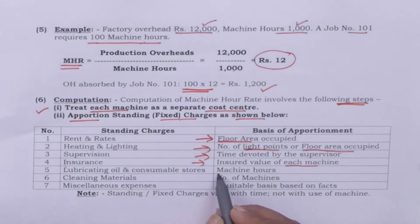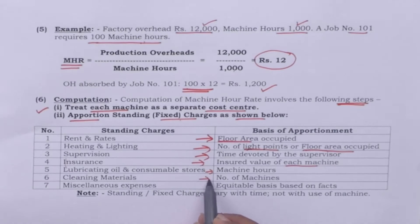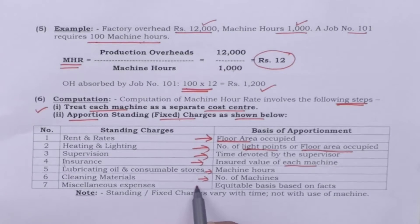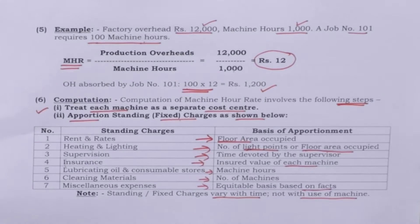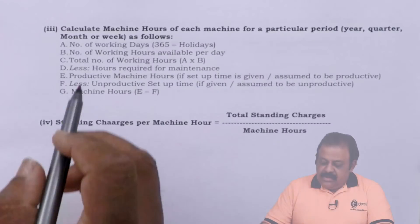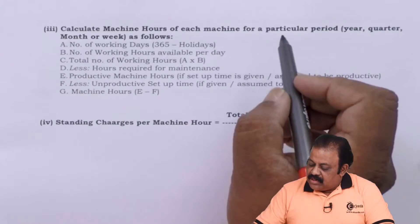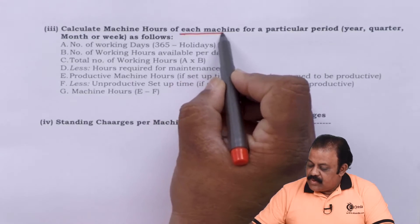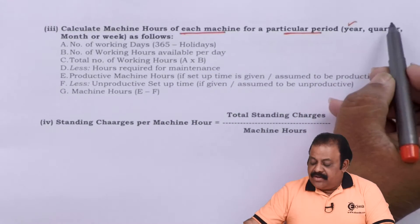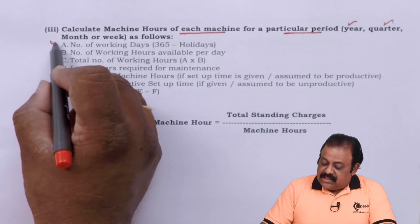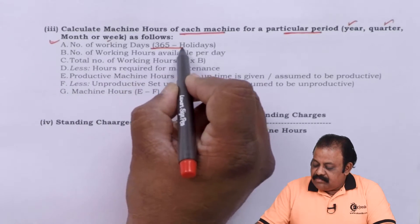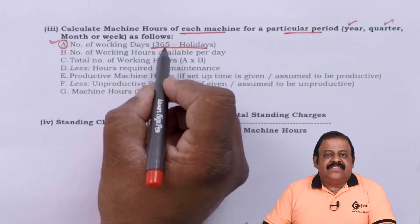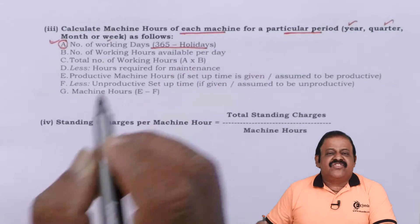Lubricating oil and consumable stores are based on machine hours; cleaning materials based on number of machines; miscellaneous expenses on an equitable basis. One important note: standing and fixed charges vary with time and not with the use of machineries. Next, we are required to calculate the machine hours for each machine for a particular period — whether that is a year, quarter, month, or week.